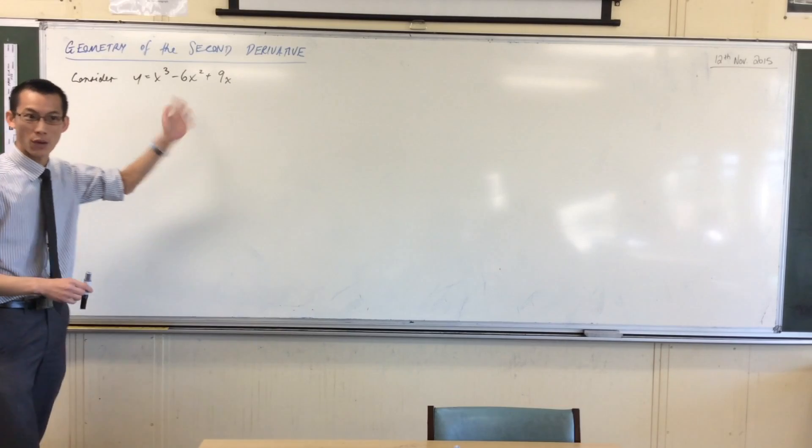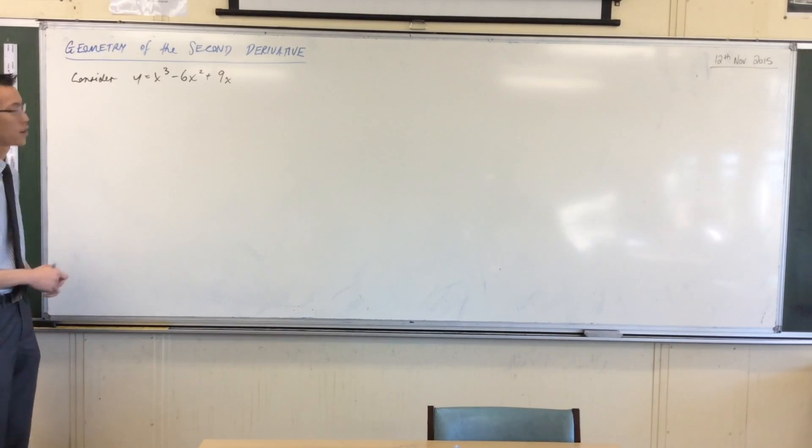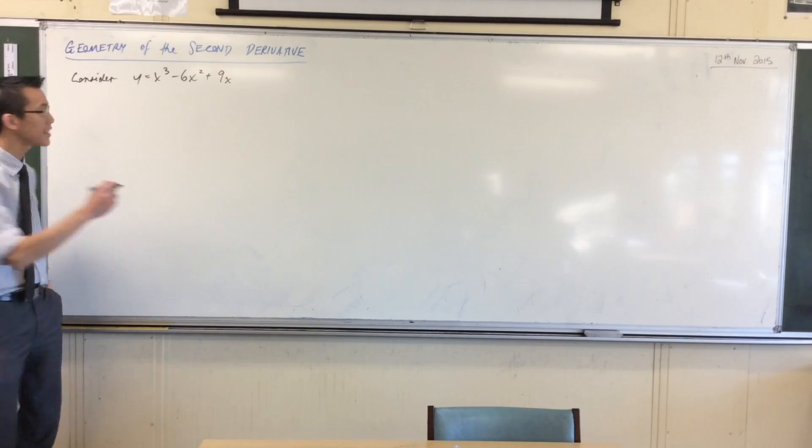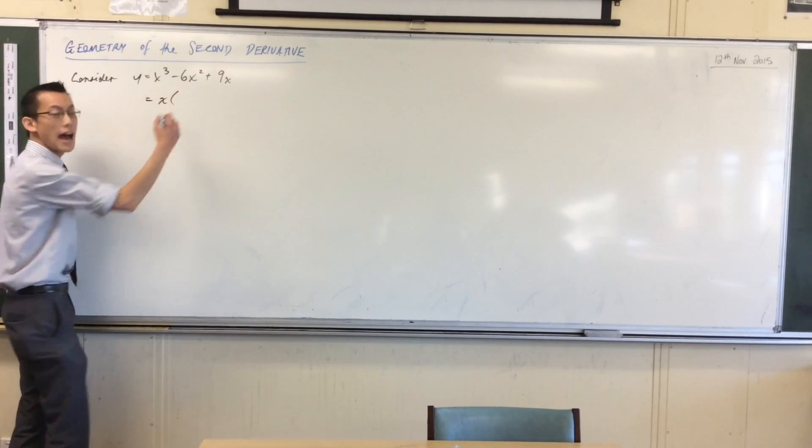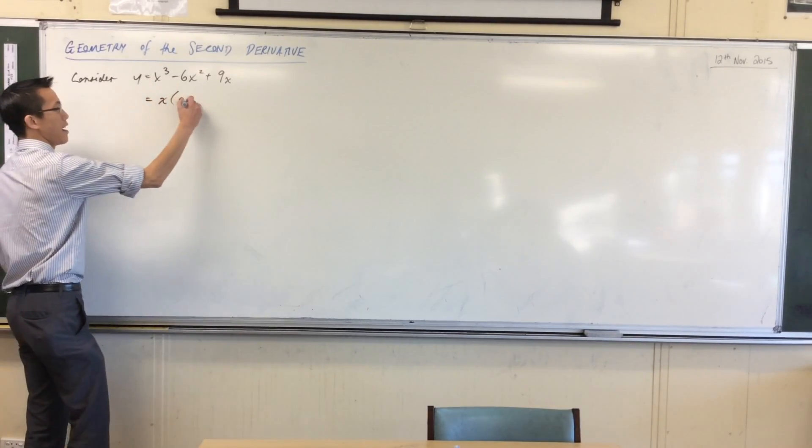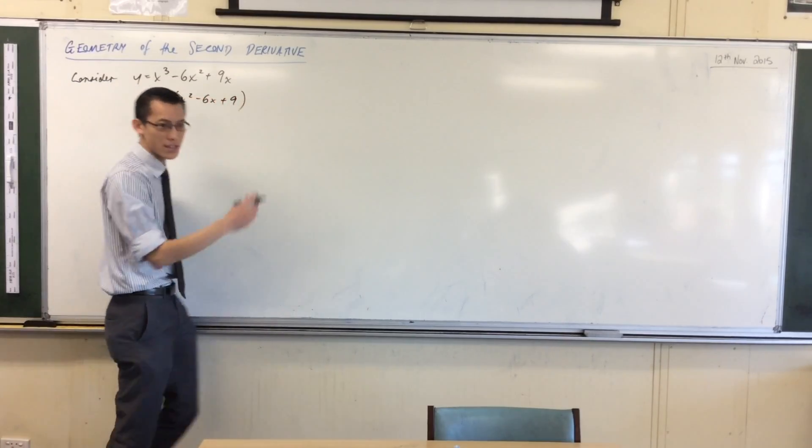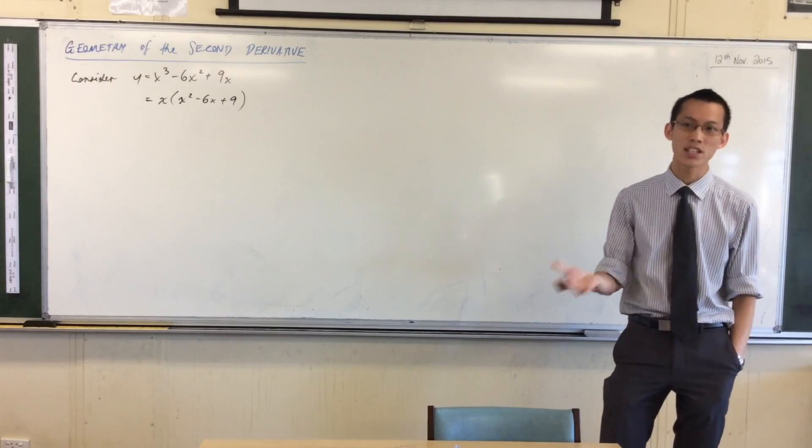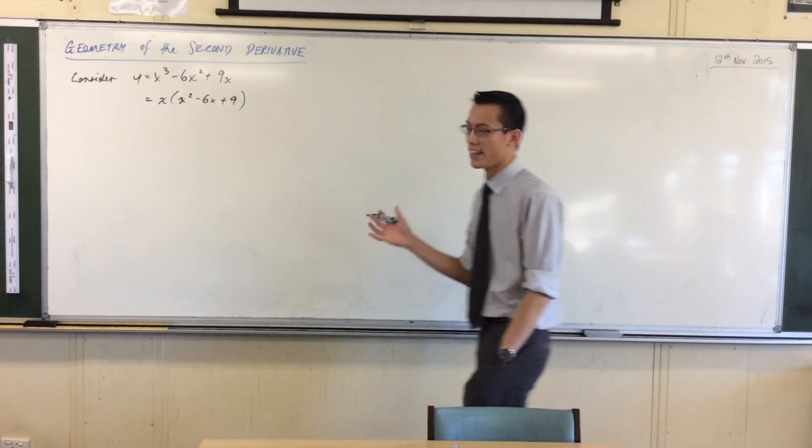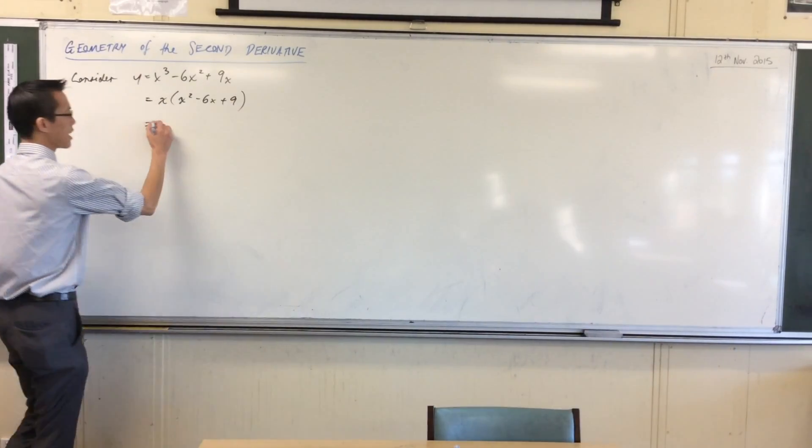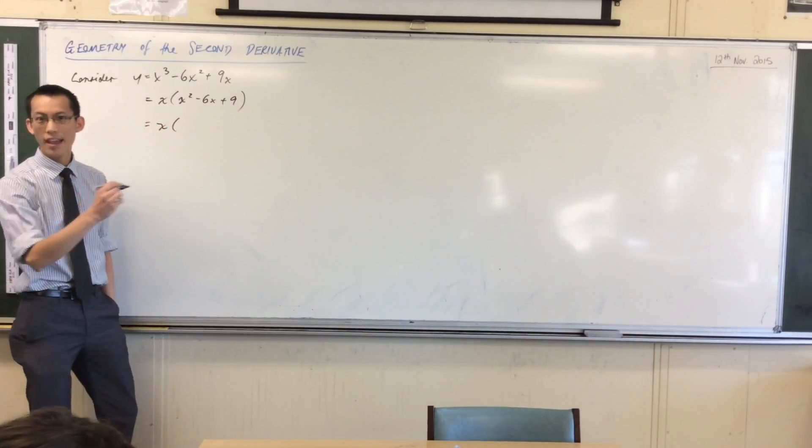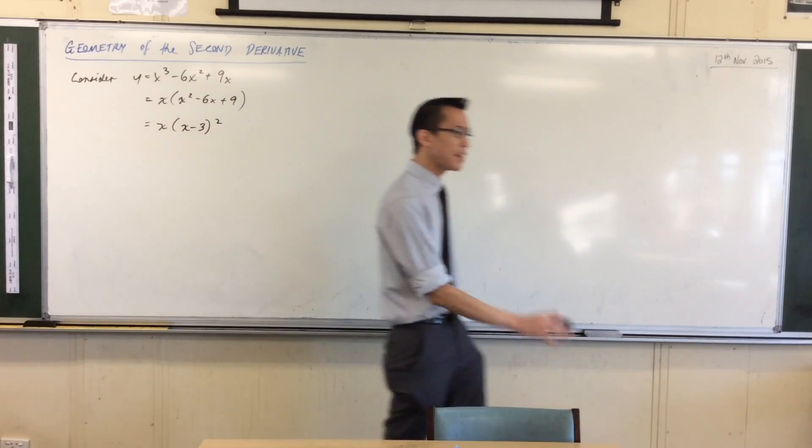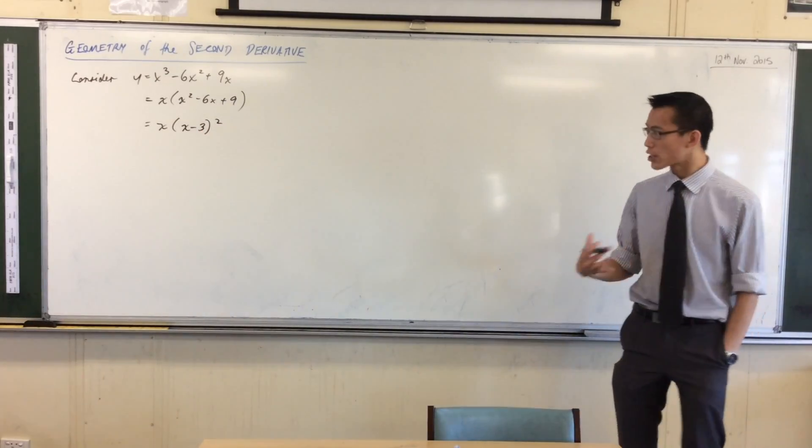We usually approach polynomials by factorizing. It's a very easy cubic - I can take a factor of x out, leaving me with x² - 6x + 9. That's nice because what's left is a perfect square. So what I've got now is x times (x - 3)² .